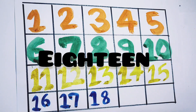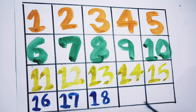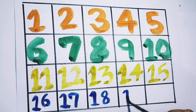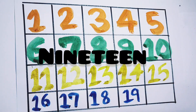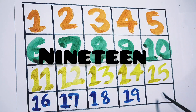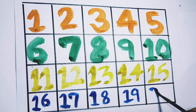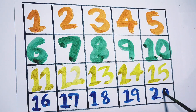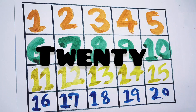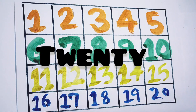18 — E, I, G, H, T, E, E, N — 18. 19 — N, I, N, E, T, E, E, N — 19. 20 — T, W, E, N, T, Y — 20.